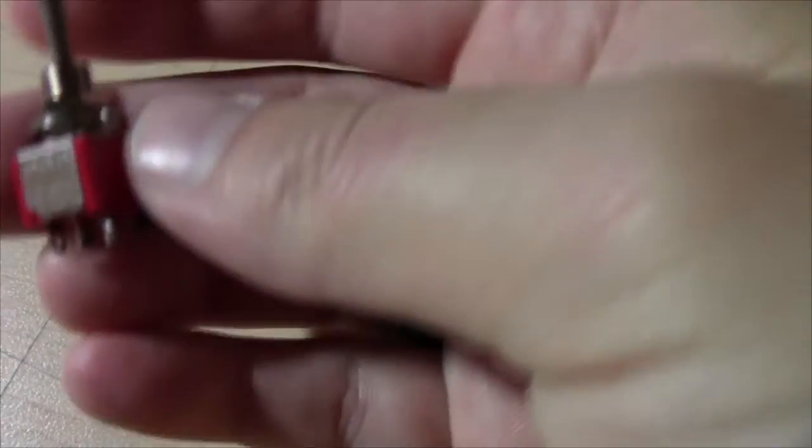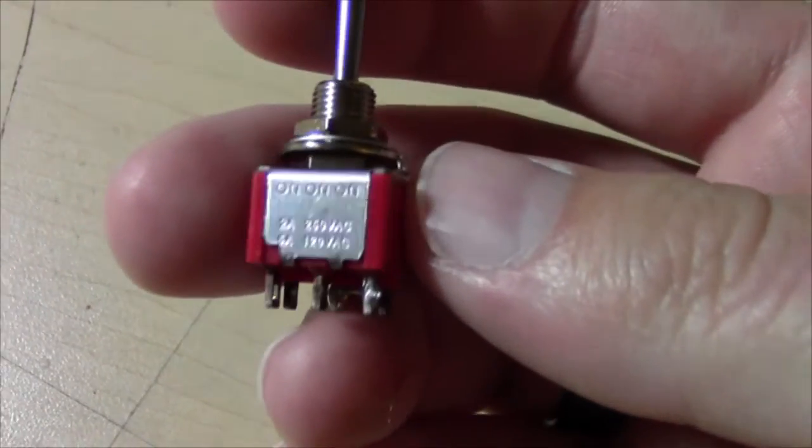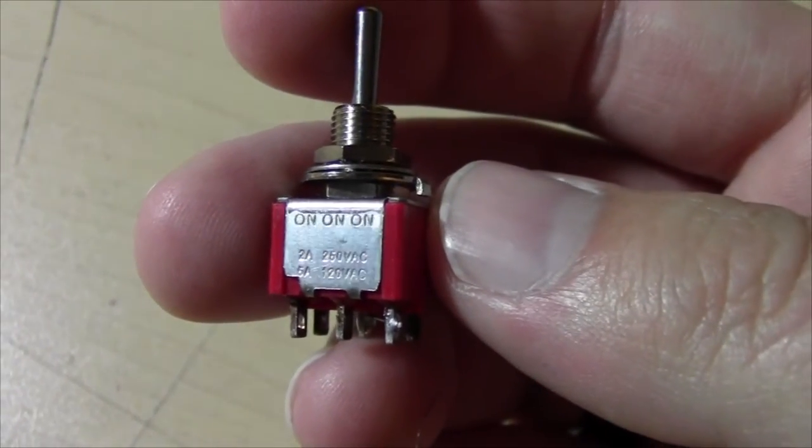And it wasn't doing that. So I had assumed I had the wrong kind of switch because you can get double pole, double throw switches like this one, which are on-on-on. But you can also get ones that are on-off-on.